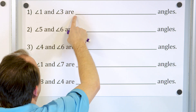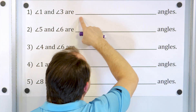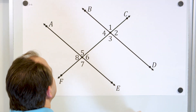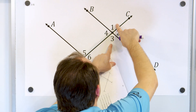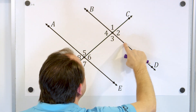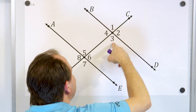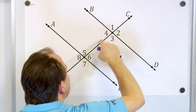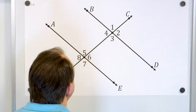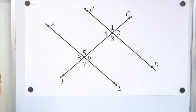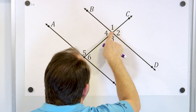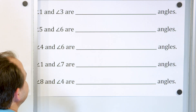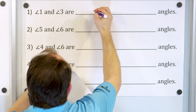Angle one and angle three are blank angles — we need to fill in the blank. Put your finger on angle one and angle three and notice that this forms like an X, and angle one and angle three are opposite each other. When you have two lines that cross, the angles that are opposite each other are called vertical angles, and angle one is actually equal to angle three — the same degree measure. These are called vertical angles.